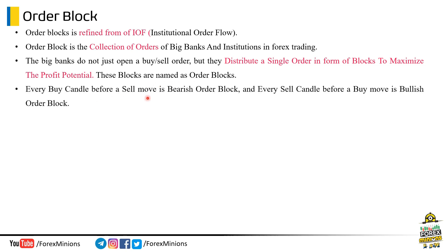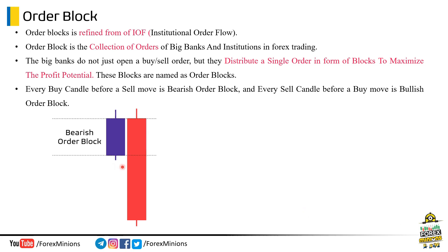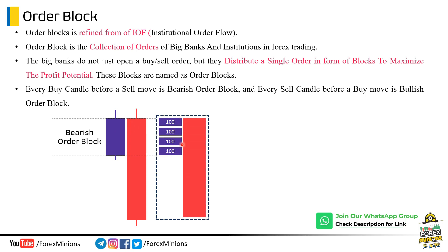Remember: every buy candle before a sell move is a bearish order block, and every sell candle before a buy move is a bullish order block. Let's understand this by a diagram. This is a candlestick pattern. As you know, every buy candle before a sell move is a bearish order block — so we can mark this bullish candle as a bearish order block. This bullish candle looks like a single candle, but it actually contains a lot of buy orders inside it. If we cross-section this bullish candle, you will notice big institution orders inside it. Big institutions stack their orders in the form of blocks — these blocks offer better prices for a sell move.